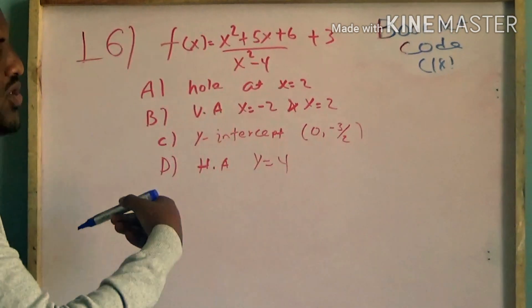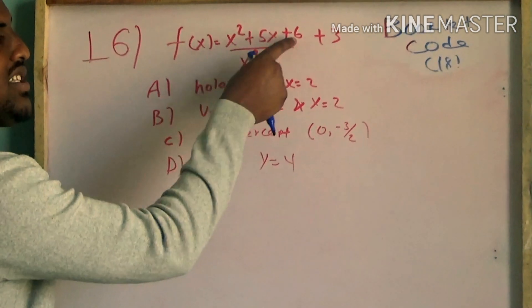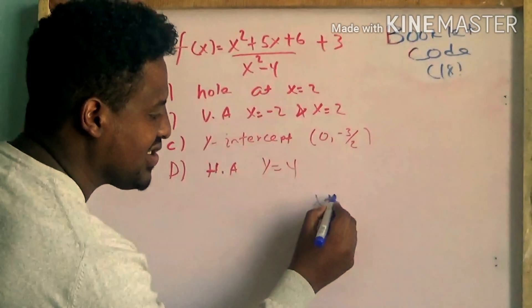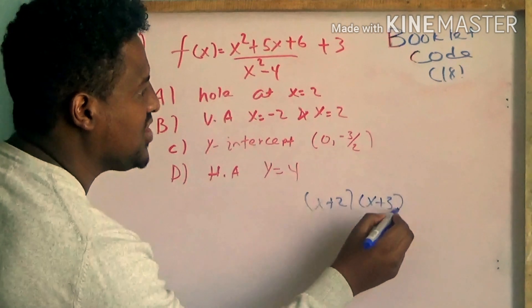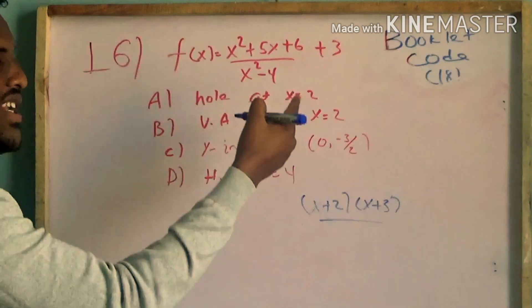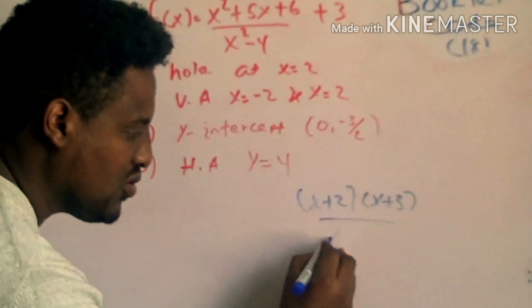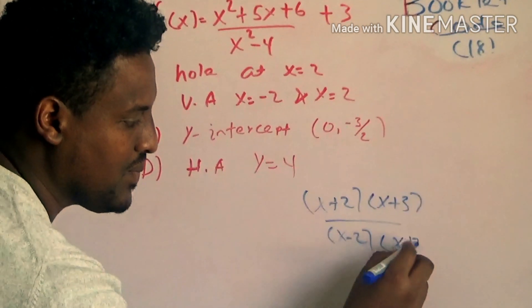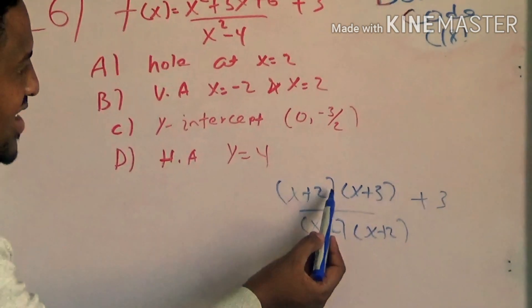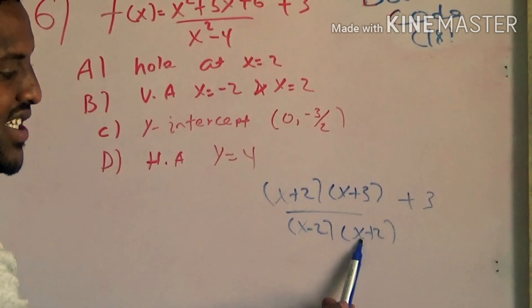We will write the quadratic function. We will write the numerator as x plus 2 times x plus 3. We will write the denominator x squared minus 4 as x squared minus 2 squared, which factors as x plus 2 times x minus 2. That gives us x plus 2. So at x equals negative 2, this is equal to 0 over 0.